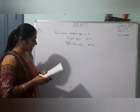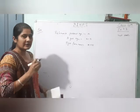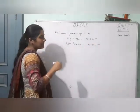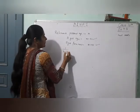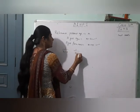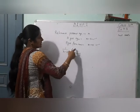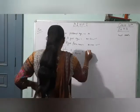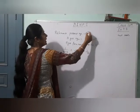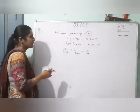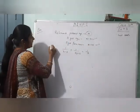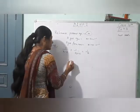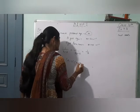Ab ismein bola hai sum of the reciprocals. In dono ages ke reciprocals ka sum 1 by 3 hai. Toh hume x ki value nikaalni hai — find the present age. Simple equation ban chuki hai according to question. Taking the LCM: you will get x plus 5 plus x minus 3 over (x minus 3)(x plus 5) equals 1 by 3.